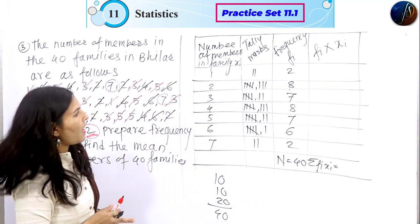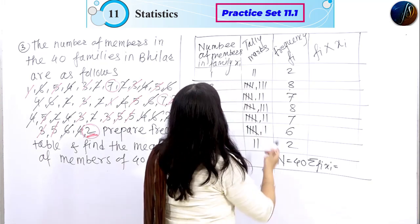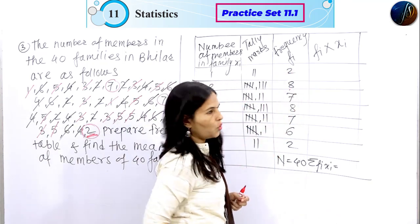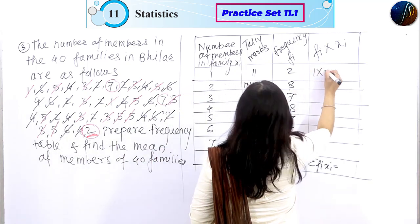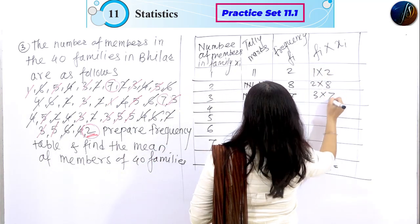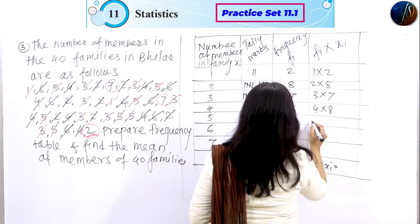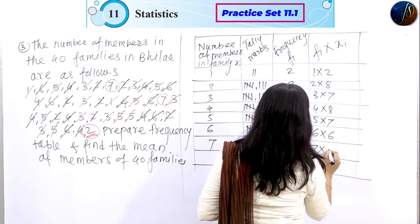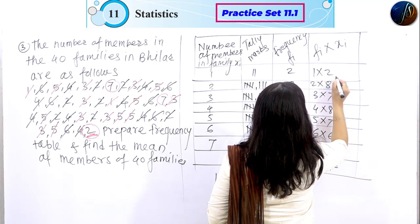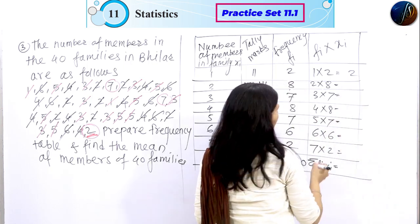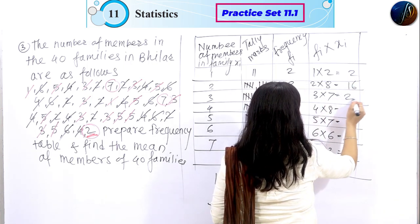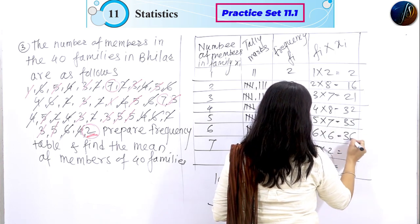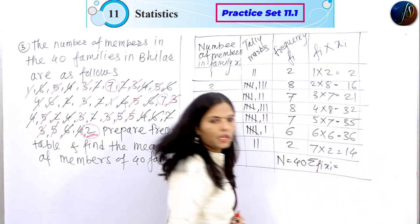The summation of fi × xi will be: 1 into 2, 2 into 8, 3 into 7, 4 into 8, 5 into 7, 6 into 6, and 7 into 2. So this multiplication works out as: 2 ones are 2, 2 eights are 16, 7 threes are 21, 32, 7 fives are 35, 6 sixes are 36, 7 twos are 14.